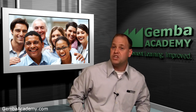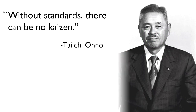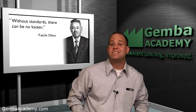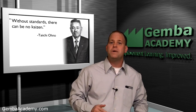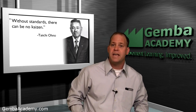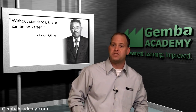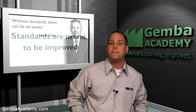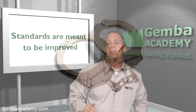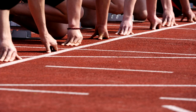Taiichi Ohno, the chief architect of the Toyota Production System, once said that without standards there can be no Kaizen. In other words, if you are always doing things differently without agreeing to a standard, it will be nearly impossible for anyone to improve a process in a sustainable manner. Standards are not handcuffs like some mistake them to be — instead, standards are the starting point for continuous improvement.